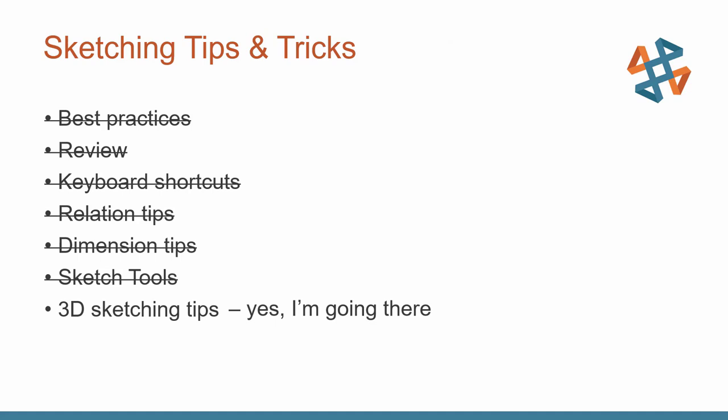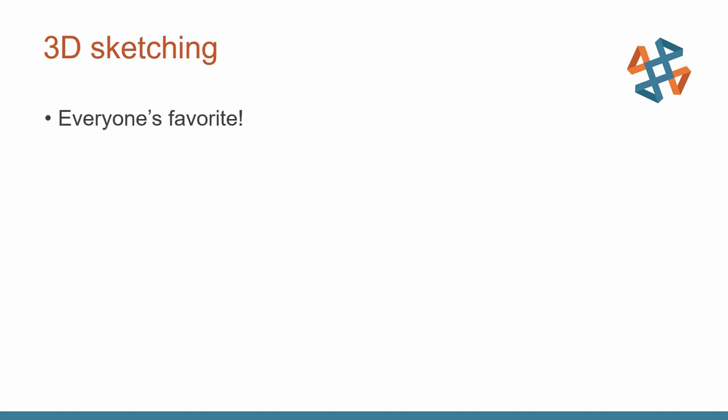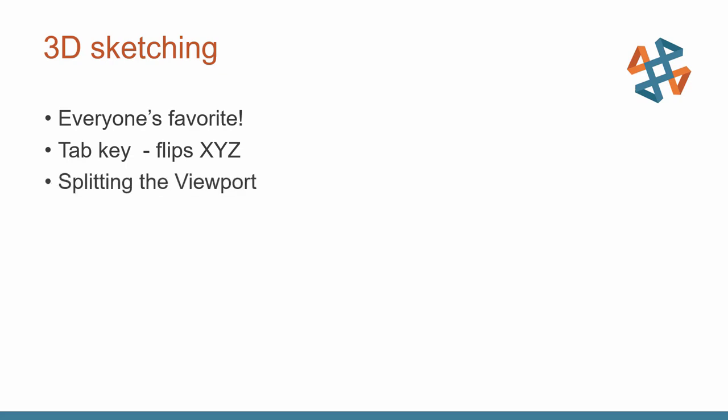We're done with the 2D tips and tricks. Let's talk about some 3D sketching tips and tricks. I know 3D sketches are everyone's favorite — we all love to use them constantly. All right, maybe that's not entirely true. Maybe you hardly ever use 3D sketches and you find them a little intimidating. Hopefully I can make them a little bit easier to understand. The first key to a 3D sketch is to use Tab. Tab will temporarily adjust the X-Y, Y-Z, and Z-X planes you're sketching in. You can also split the viewport from one main viewport to four independent viewports, and there's a nice tool called the sketch triad to help manipulate a sketch in the X, Y, or Z directions.